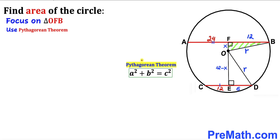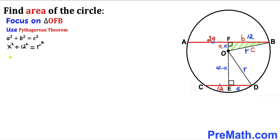We are going to apply the Pythagorean theorem on this triangle: a squared plus b squared equals c squared. The longest side is r (side c), side a is x, and side b is 12. So we get x squared plus 12 squared equals r squared, which simplifies to x squared plus 144 equals r squared. Let's call this equation number one.